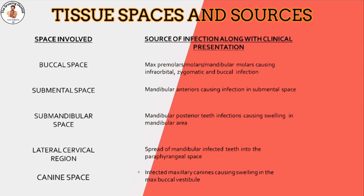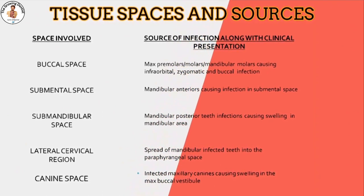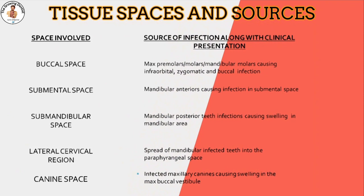Regarding spaces involved with their sources: for the buccal space, the source of infection is maxillary premolars or molars, whereas in the mandible it is molars only, causing infraorbital, zygomatic, and buccal infection. Mandibular anteriors cause infection in the submental space. For the submandibular space, mandibular posterior teeth cause infection and swelling in the mandibular area. The lateral cervical region consists of spread from mandibular infected teeth into the parapharyngeal space. For the canine space, infected maxillary canines cause swelling in the maxillary buccal vestibule.